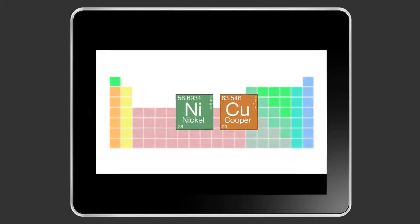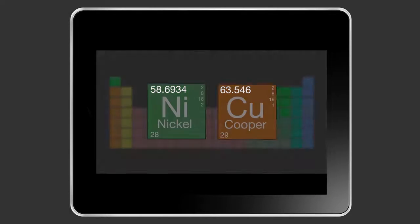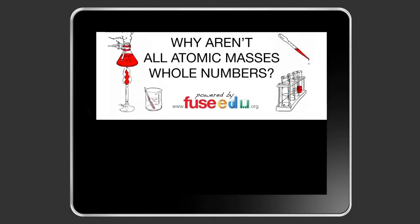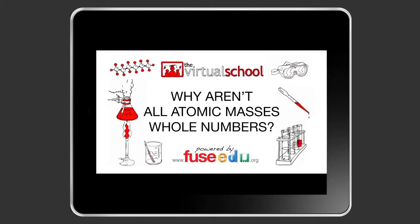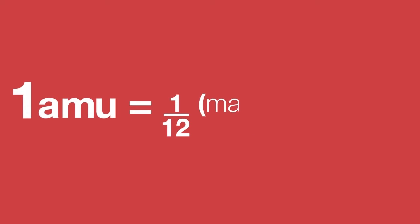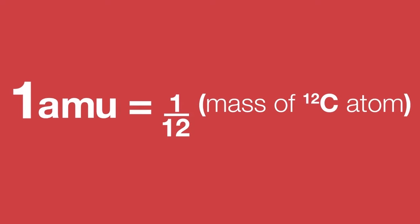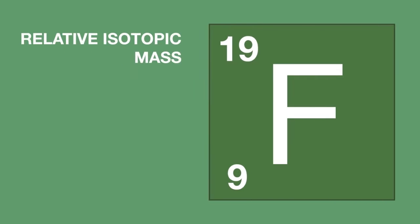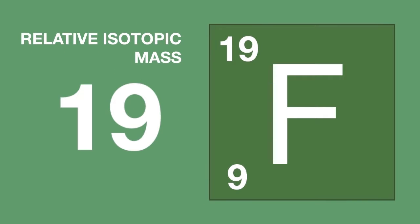Now some of you may have noticed that not all atomic masses on the periodic table are whole numbers. We'll be covering these in our lesson 'Why Aren't All Atomic Masses Whole Numbers?' But from this lesson, you need to remember: one atomic mass unit is one twelfth of the mass of a carbon-12 atom, and we can use this to work out the relative mass of a particular atom.